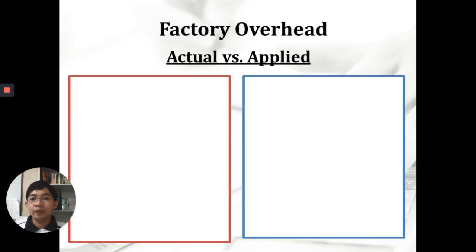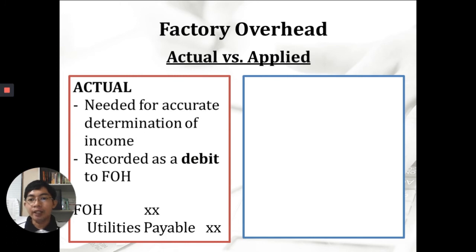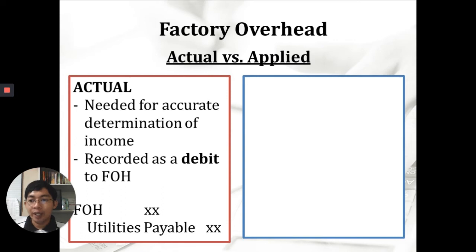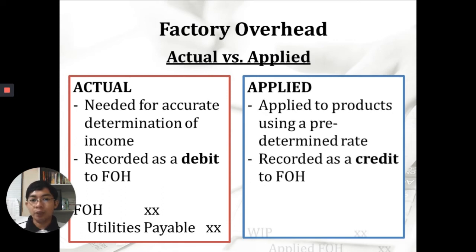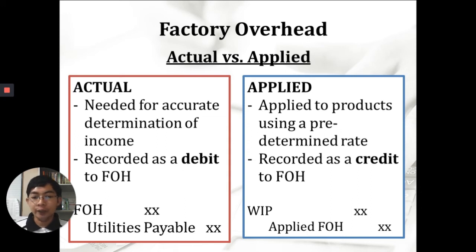When it comes to factory overhead, there are two things to know: actual factory overhead and applied factory overhead. Actual overhead is needed for accurate determination of income — it is incurred and recorded as a debit, referenced by receipts and statements of account from suppliers. Applied factory overhead is applied to products using a predetermined rate — these are estimations, recorded as a credit to factory overhead, with the entry being debit work in process, credit applied factory overhead.